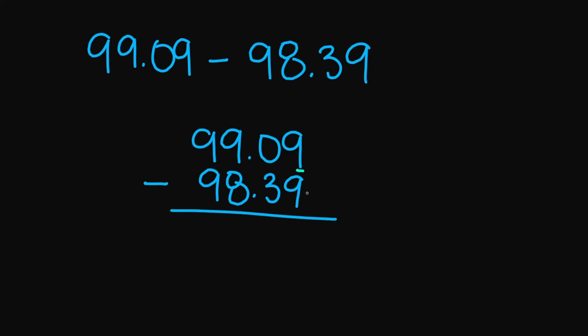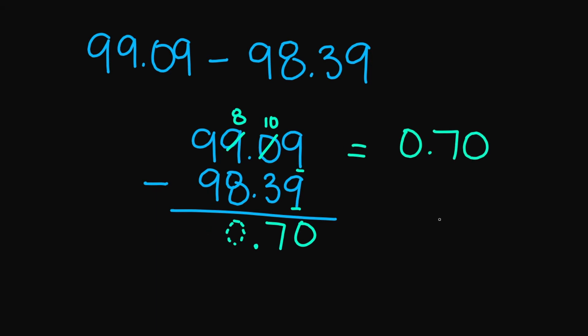Let's try 99.09 minus 98.39. Let's go ahead and line up our numbers and our decimal. 9 minus 9 is 0. 0 minus 3 — I need to borrow. I'm going to borrow here in the ones place. This 9 becomes an 8, and this 0 in the tenths place becomes a 10. So 10 minus 3 is 7. Bring that decimal down. 8 minus 8 is 0, and 9 minus 9 is 0. So your final answer is going to be 0.70.